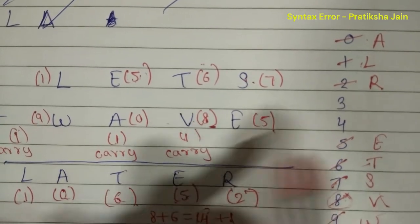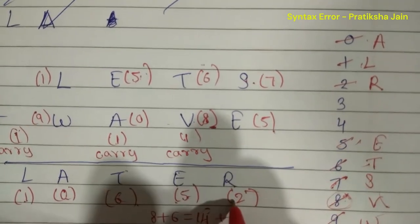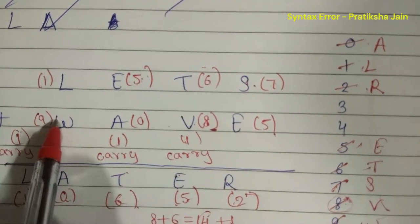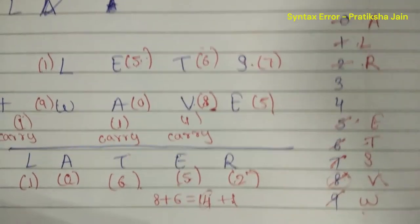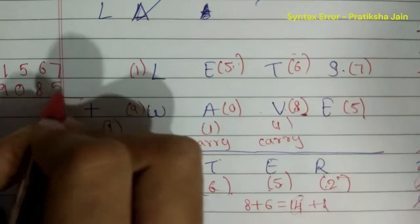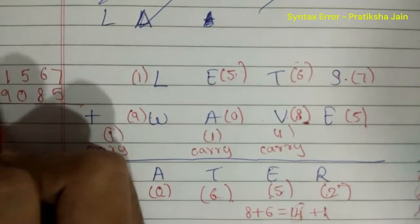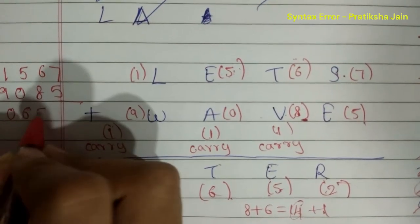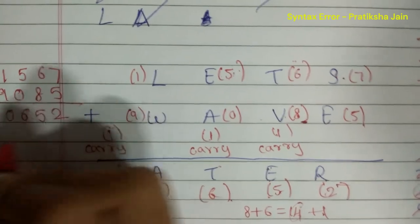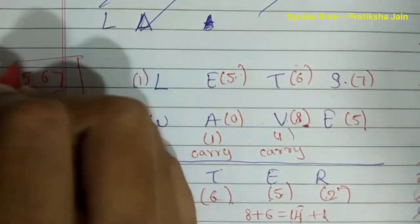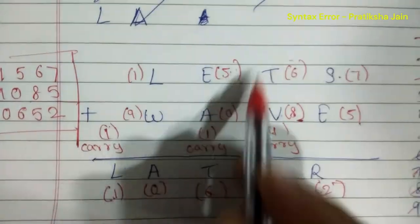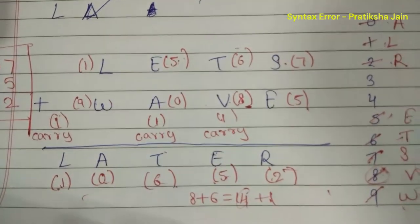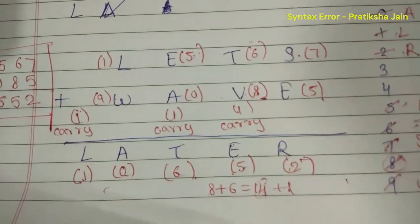So the final answer is: L=1, W=9, A=0, E=5, T=6, V=8, S=7, R=2. The number formed is 1, 0, 6, 6, 5, 2 — and nine for W. This is the answer for LETS plus WAVE equals LATER. I hope this was helpful, thank you.